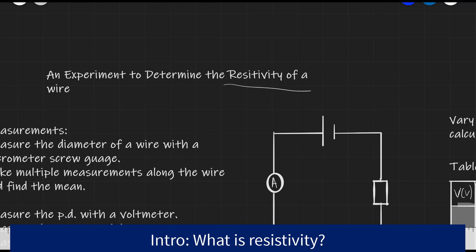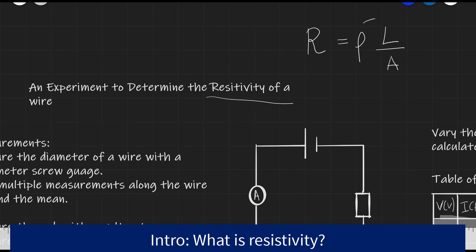A formula you would have covered in A-level is that resistance is proportional to the length of the wire and inversely proportional to the area. The constant of proportionality is known as resistivity and it's given the symbol rho, which is actually just a Greek letter rho spelled like this.